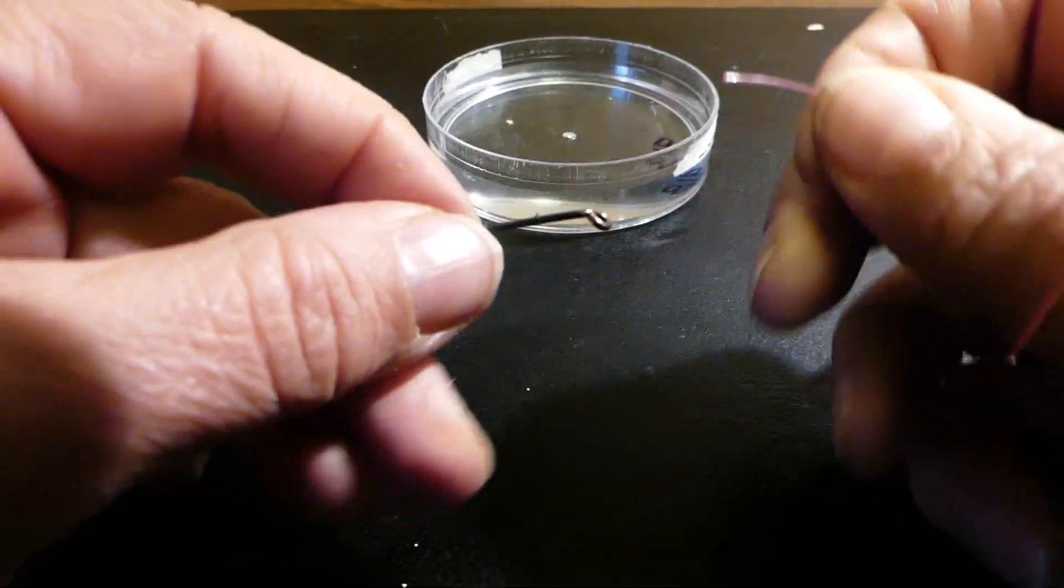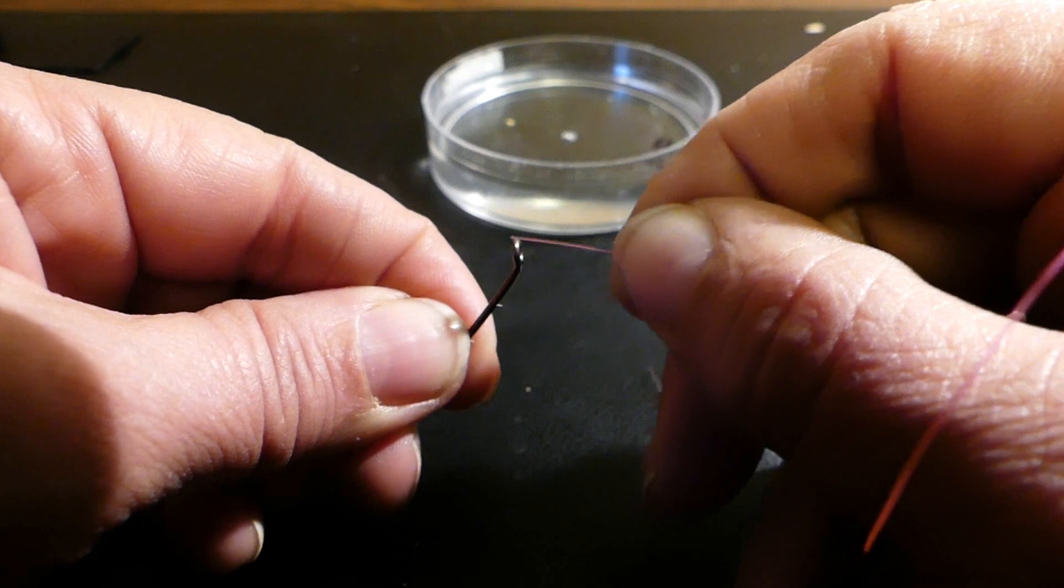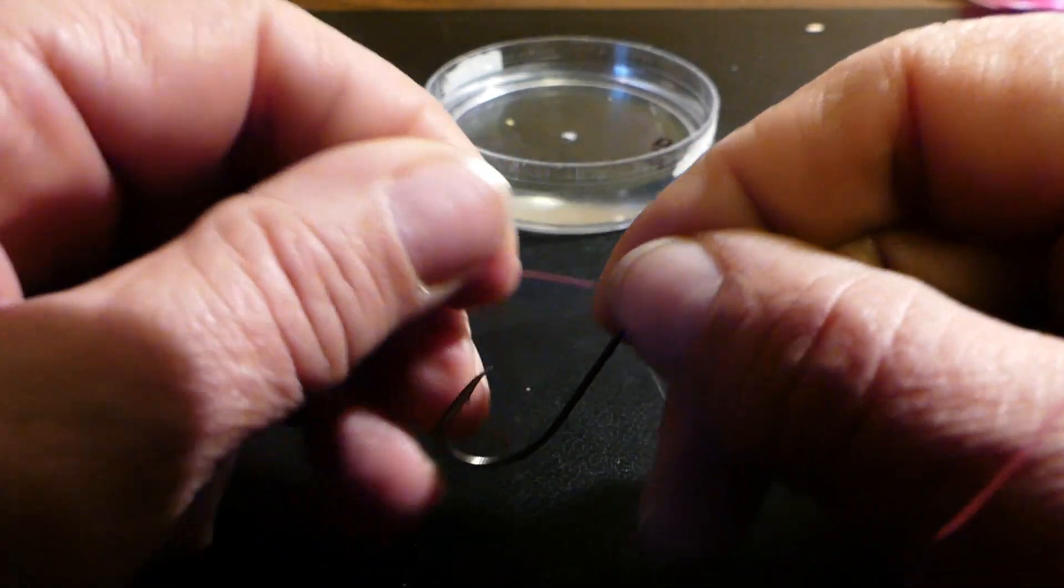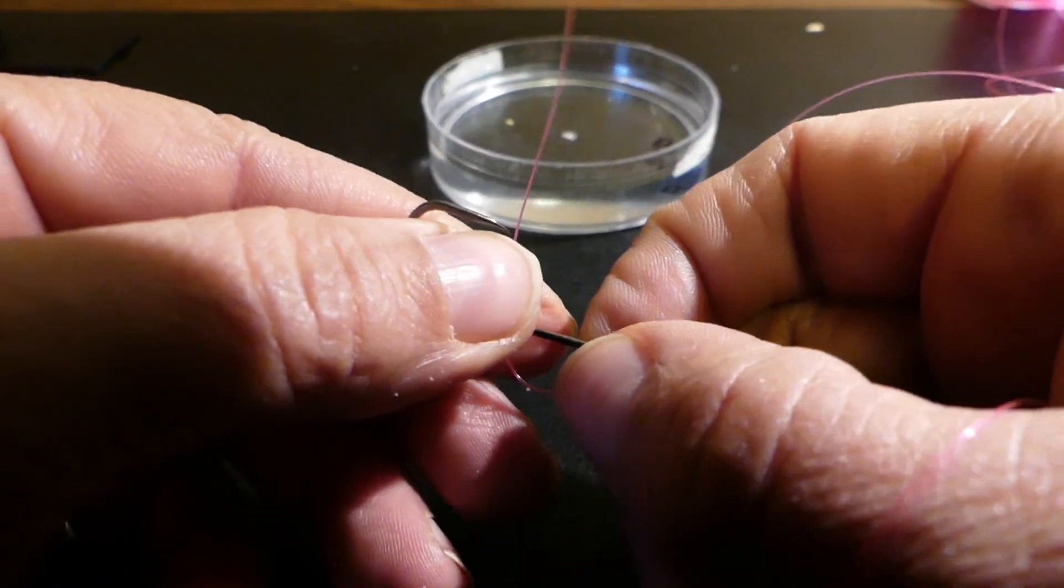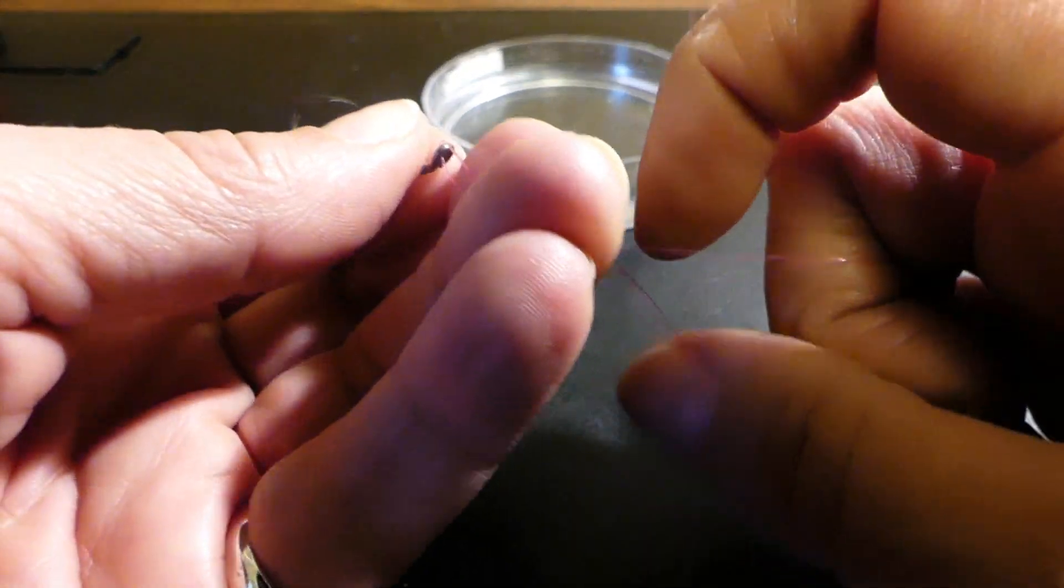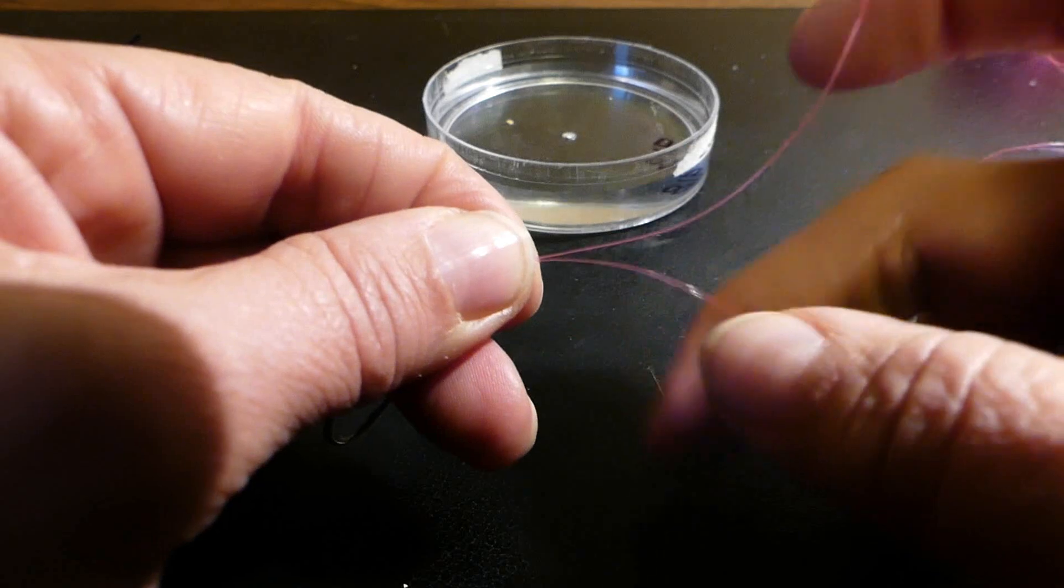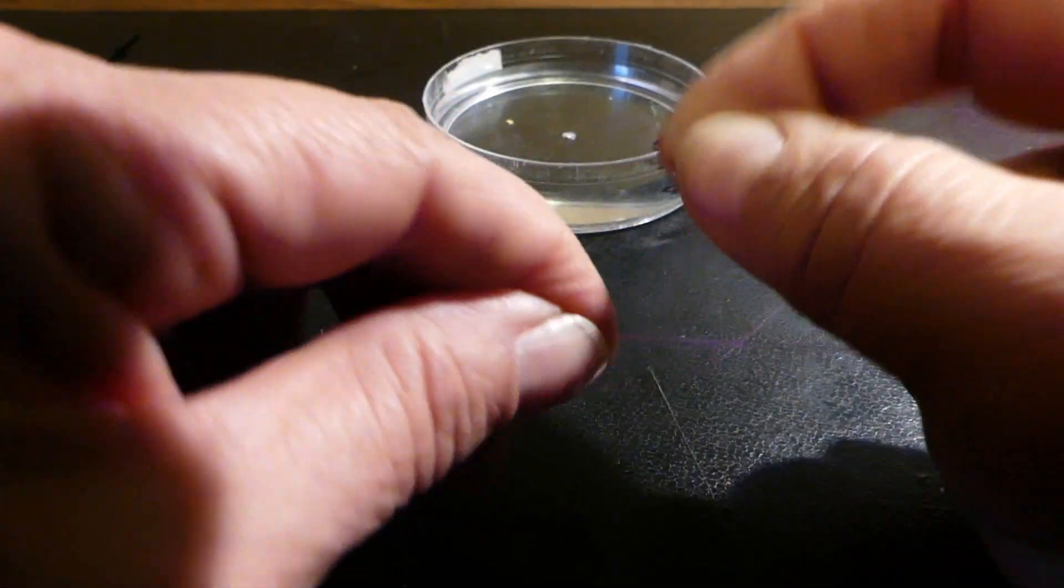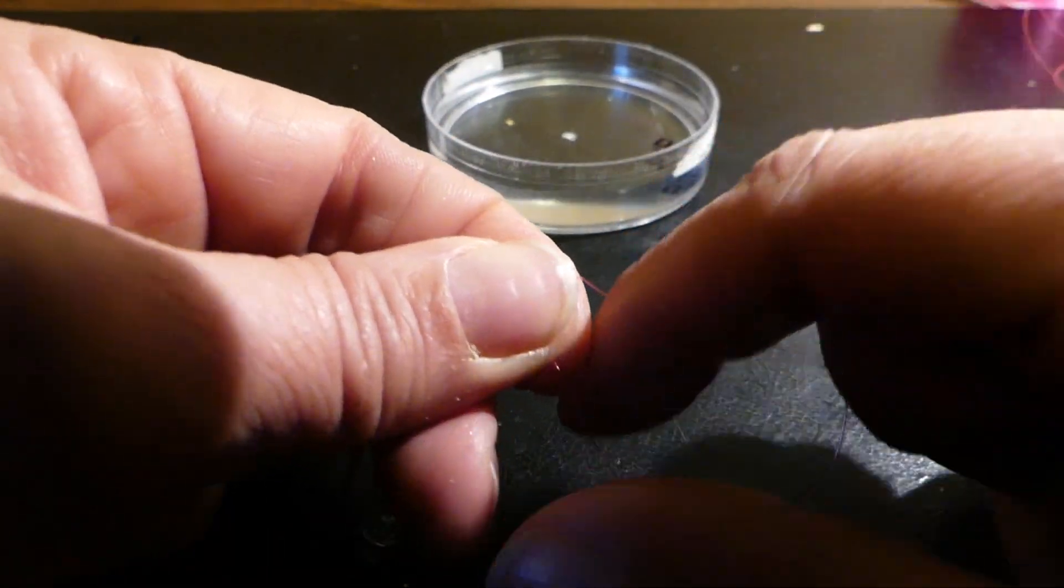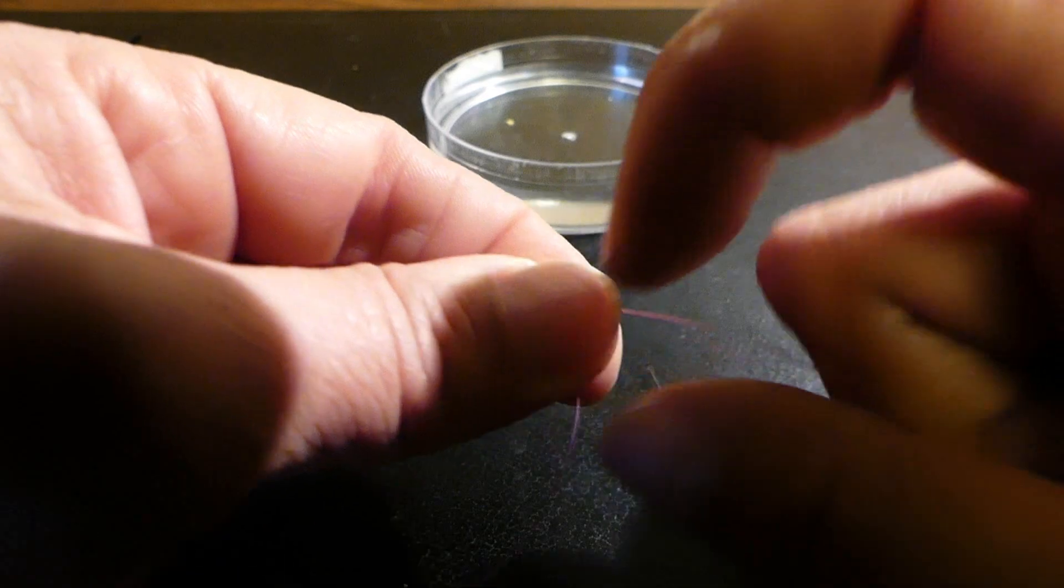You're going to start off as you do with every knot. We're going to thread our line through the eye of the hook. Give ourselves a generous tag end to work with. We've got our main line which goes back to the reel, and the tag end which is the end you work with. You're going to wrap this tag end around about six times around the standing line, your main line. Six times is usually the norm for most knots. You can do eight if you want, but I wouldn't go less than six if you can avoid it.